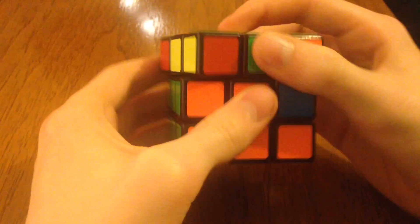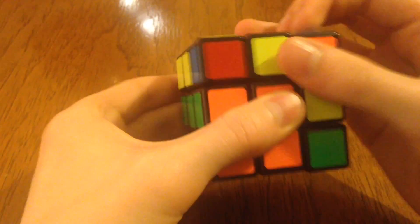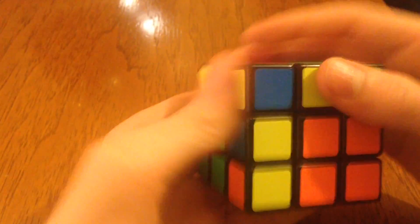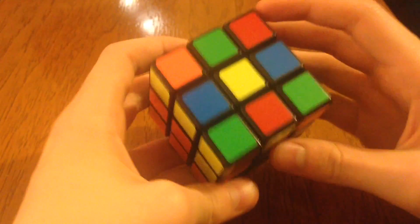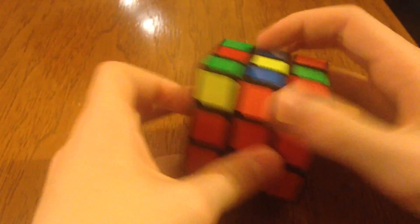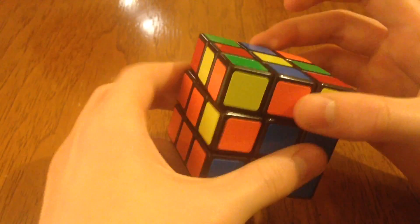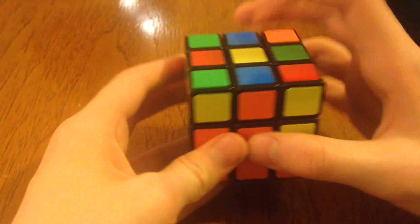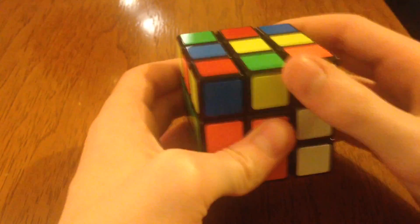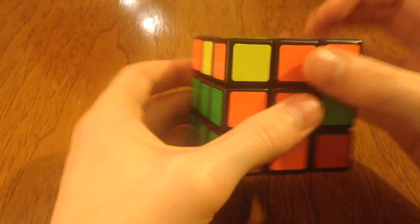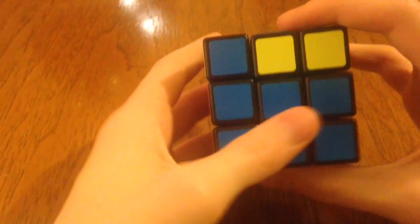I'll do my pattern U R U prime R prime U prime F prime U F. And see, now it's gone. And it's put it back in the top somewhere. There it is. So we're going to put it back to where it goes. We've got it in the correct slot. And it's going to go to the right. So here we go again. U R U prime R prime U prime F prime U F. And look at that.